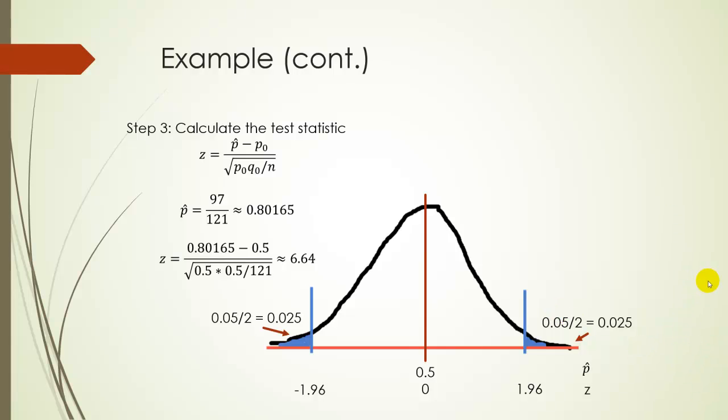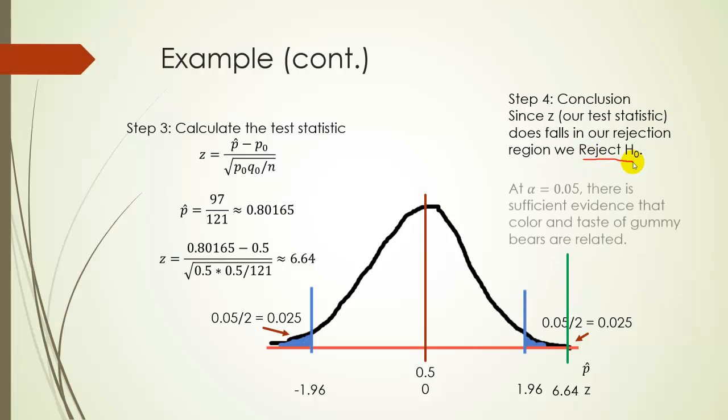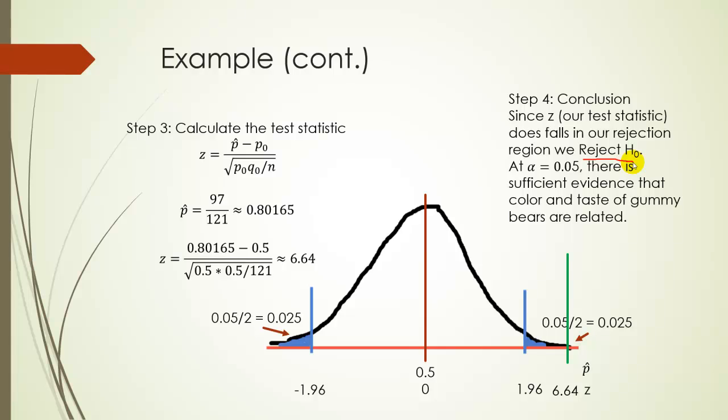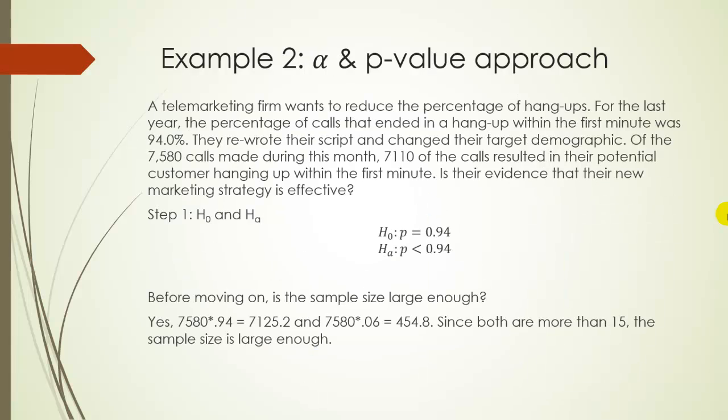So this is a very unusual situation. Really, it would be off the slide. It would be somewhere over here. But I'm not too concerned about scale. I just care about position. So I'll just draw my test statistic over here at 6.64. So since it clearly falls in the rejection region, our conclusion is that we're going to reject H0. And in other words, at a 5% significance level, there is sufficient evidence that color and taste of gummy bears are indeed related to each other. People can actually predict the color of a gummy bear based on its taste, based on just taste alone.